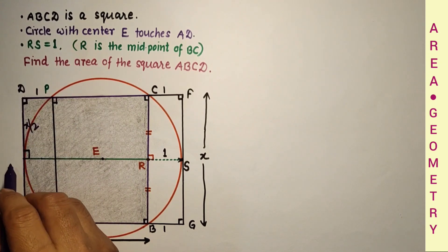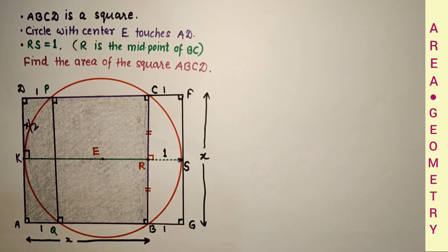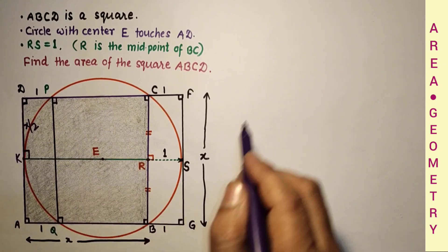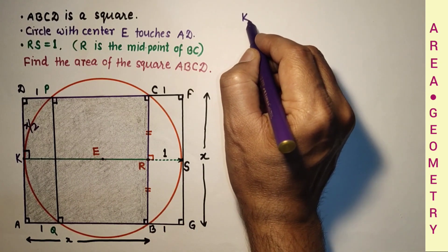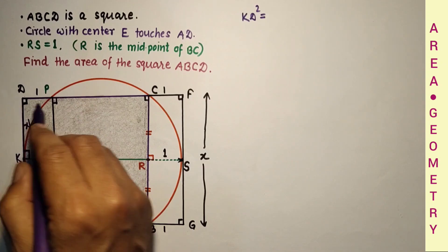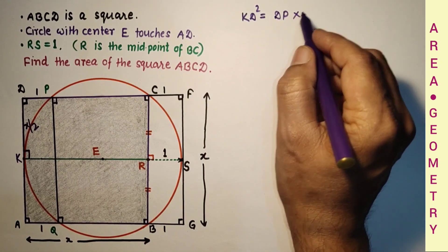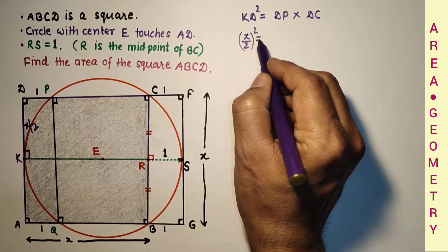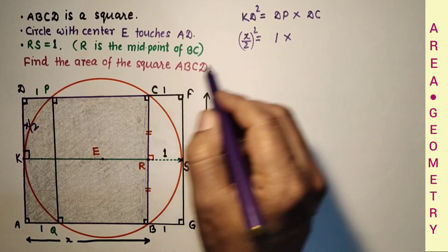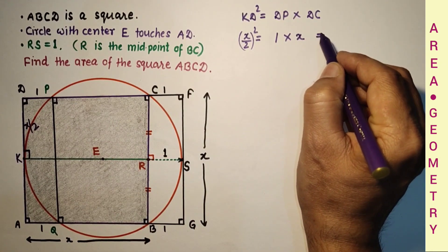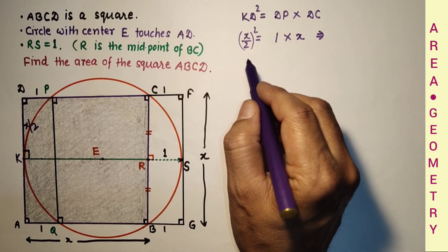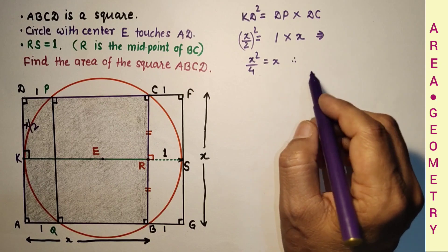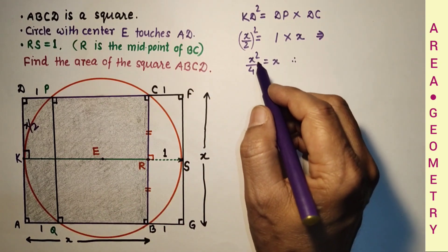Let us suppose this is K point, so DK is X by 2. And by tangent secant property, KD square is equal to DP into DC. So KD is X by 2, the whole square is equal to DP is 1 into DC is X, which equals X square by 4 equals X. That means X square is 4X, and X cannot be 0, so X is 4.